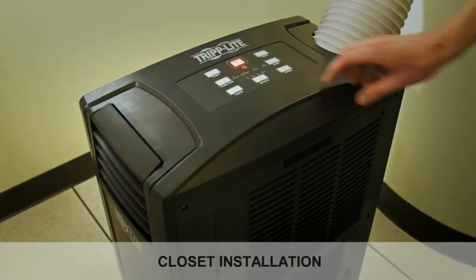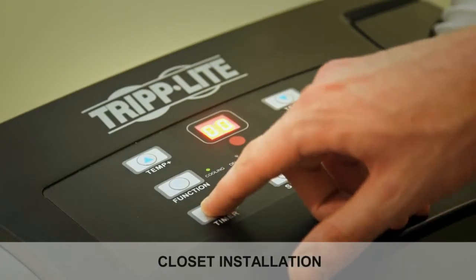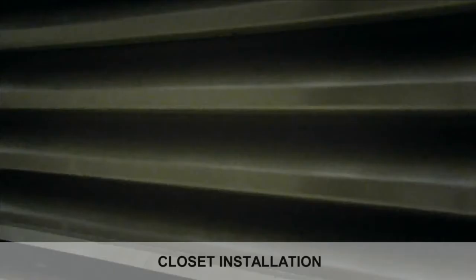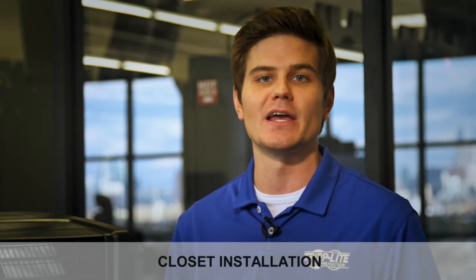If the unit will operate in a confined space such as a closet, you must supply makeup air in order to maintain efficient airflow. A vent of at least 100 square inches installed near the bottom of the door should supply adequate makeup air for a typical closet. Consult applicable building codes for more information.